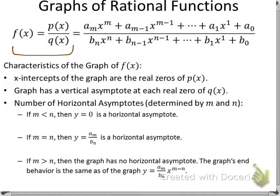What we really need from this is the lead term, because it helps us with the horizontal asymptotes. The first characteristic is the x-intercepts, or where the graph hits the x-axis. That's going to be the real zeros of p of x — we set it equal to zero, factor it, and find all the solutions.